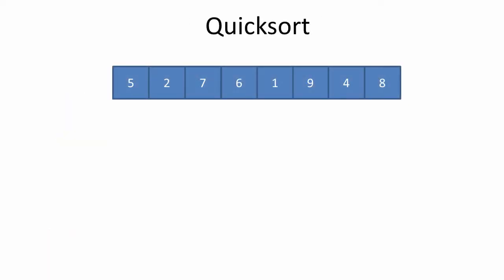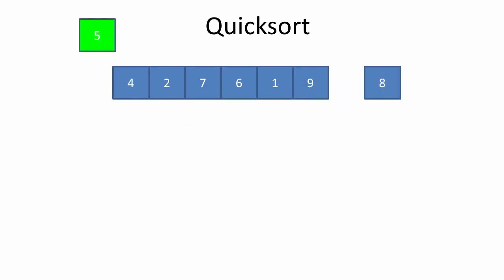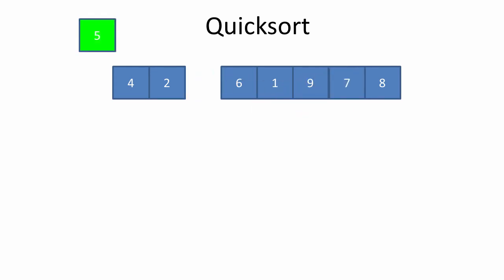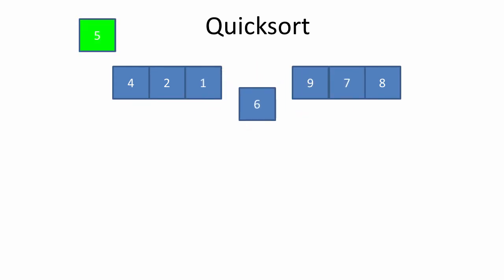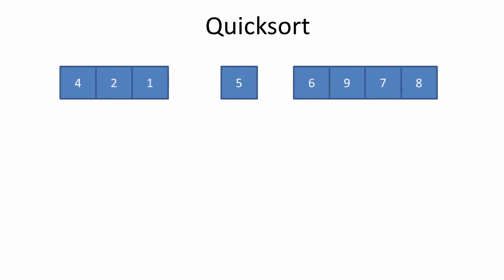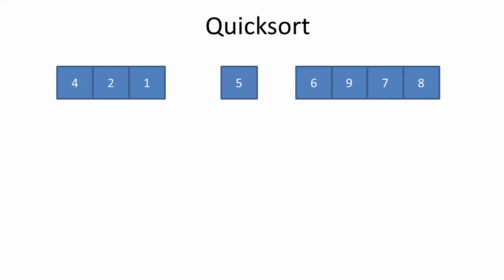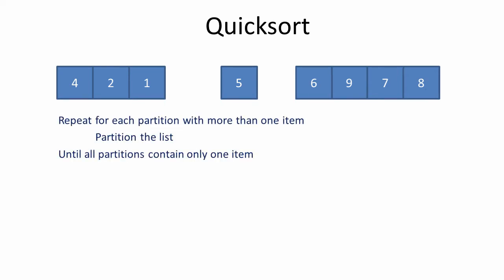Now let's consider the time and space complexities of the quicksort. Central to this algorithm is the partitioning process. In one particular approach, the leftmost item is chosen to be the pivot. Then, items at left and right pointers are compared with it and moved accordingly to generate three sublists. The pivot is now in a list of one item and is in the correct position. The partitioning process is then applied repeatedly to any sublists of more than one item, until every item is in a list of its own, and therefore is in the correct position.